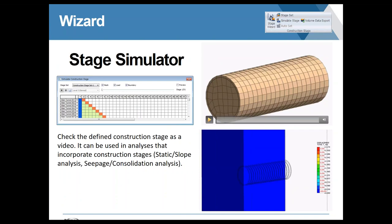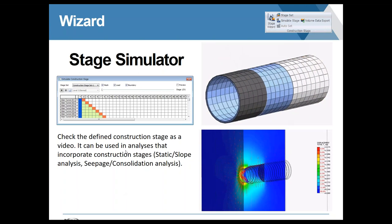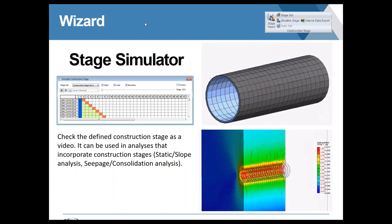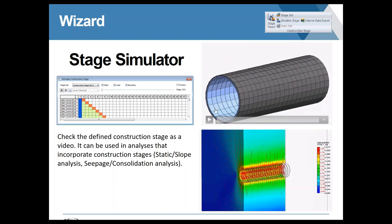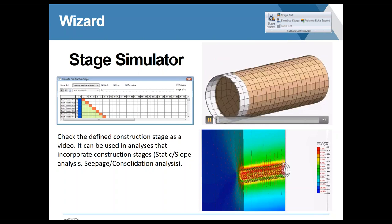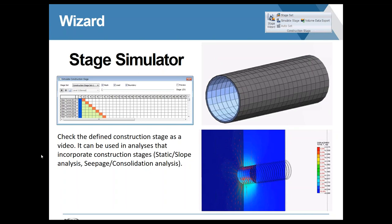Once finished, you can inspect the construction stages visually. Here we're looking at the construction sequence of today's session: first the rock, then the shield, then the joint segments or rings represented in blue, and then the grouting in black. The shield excavates, installs the support segments, and then grouting is injected—this is the sequence of the TBM excavation we're modeling today.